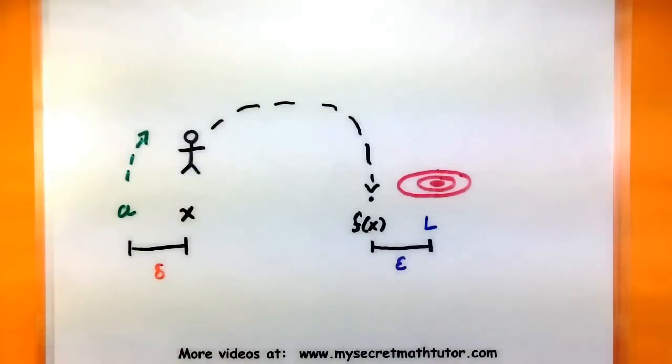Now this situation that we've basically cooked up is essentially what the limit is trying to do. It's trying to make sure that you can basically get arbitrarily close to the limit. And to force your function to be arbitrarily close, we make sure that we choose our x values appropriately. To see why this really matches up with the definition, let's go ahead and add a few more terms in here and make some connections.